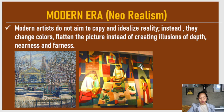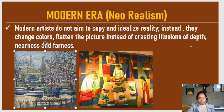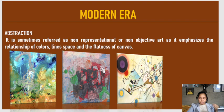The modern era represents neorealism. Modern artists do not aim to copy and idealize reality. Instead, they change colors, flatten the picture rather than creating illusions of depth — nearness and farness. It also represents abstraction, which is non-representational art.